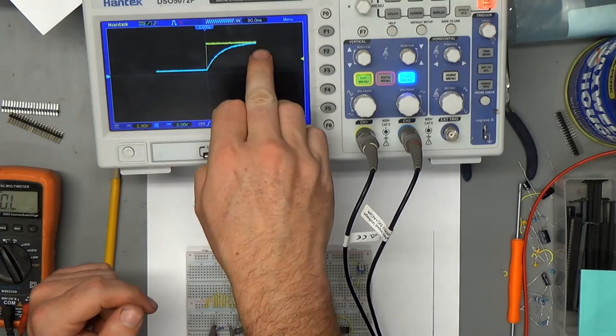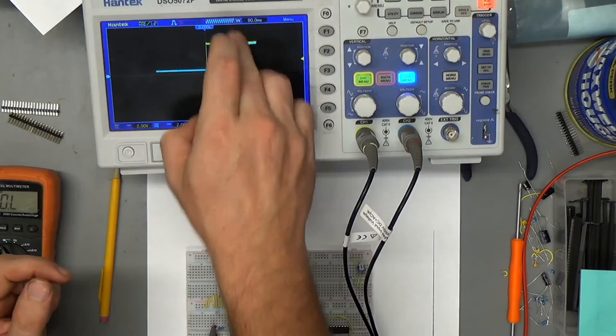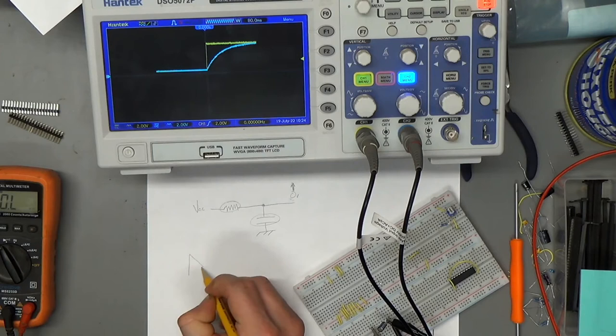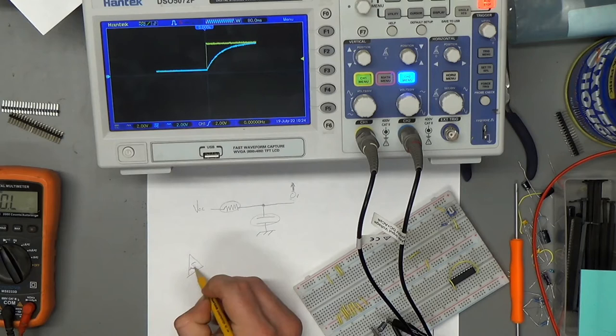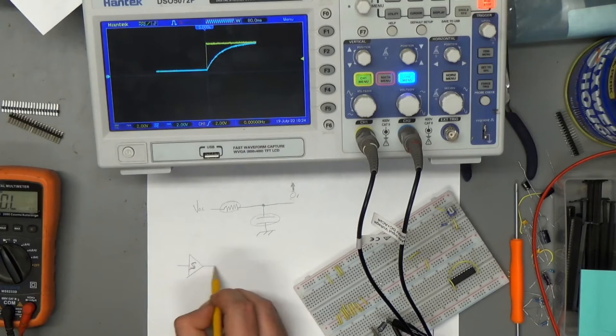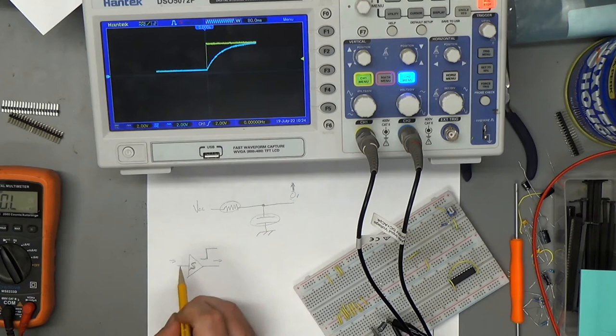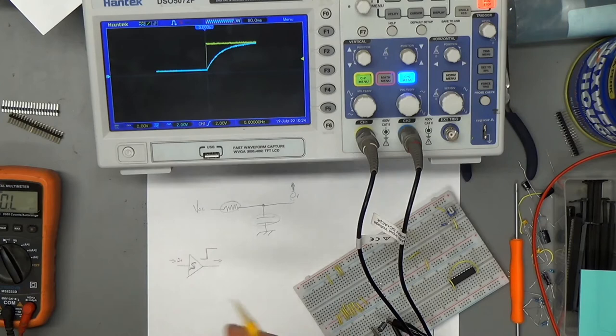How will we do that? Well, we could do that with a Schmidt trigger buffer. And the way those work, they have a sign that I can never draw, that's something like that. You know what I'm talking about. And it takes an input signal and it produces an output signal.